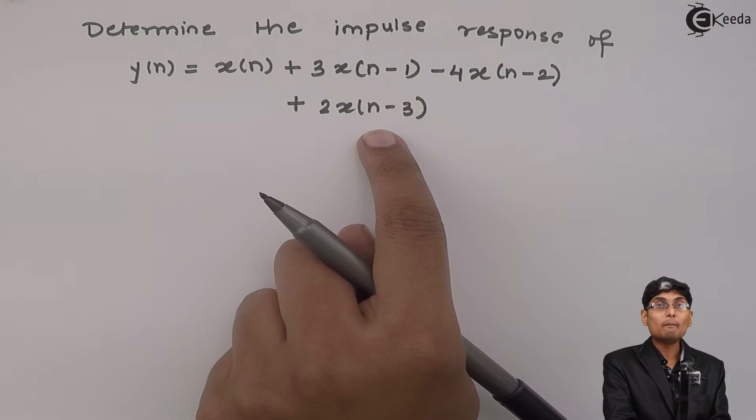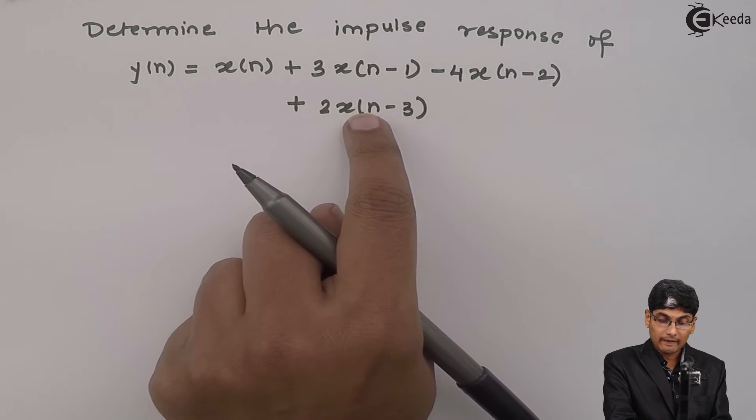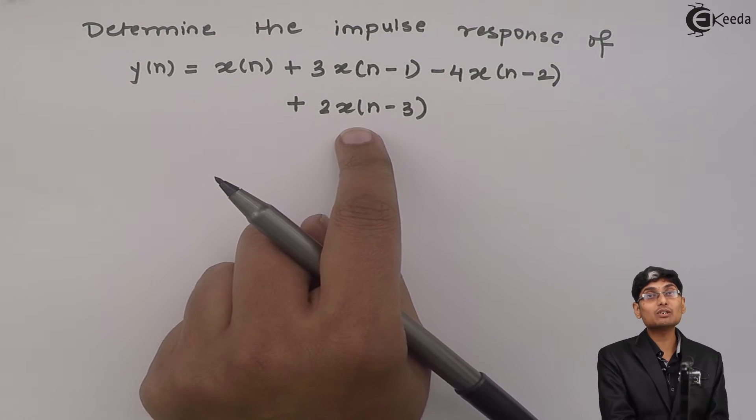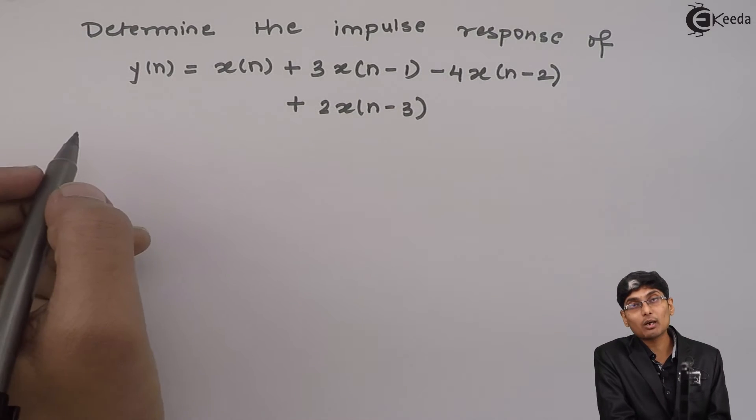So, there are no past outputs. The output depends only on inputs. That is a very special type of a difference equation where my output depends only on present and past inputs and no outputs. How to solve this problem?